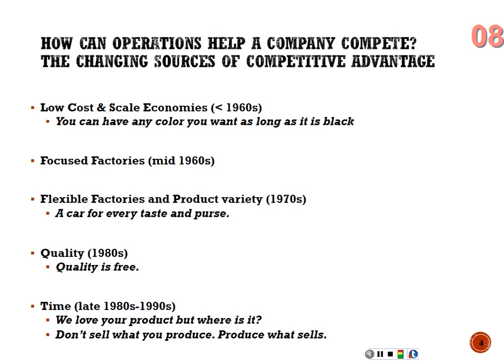In the late 1980s and 1990s, the shift was: 'we love your product, but where is it?' You don't sell what you produce — you produce what sells. The US was behind Japan in the quality revolution; some of the top quality gurus started in the US but moved to Japan because we didn't buy into the need to improve quality.